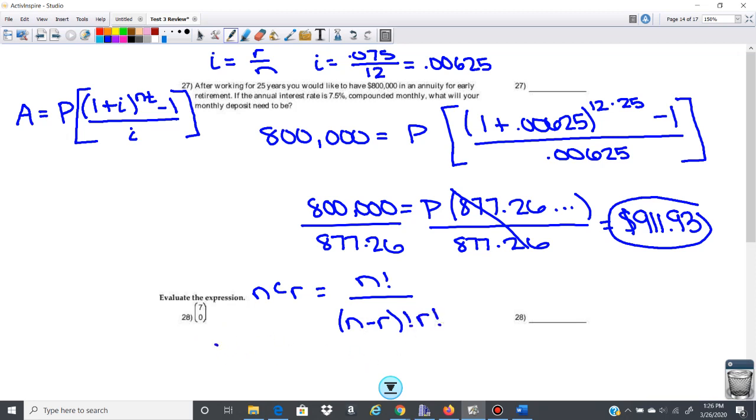So in this case, it would be 7 factorial over 7 minus 0 factorial, and then 0 factorial. And then in this case, that would be 7 factorial over 7 factorial, 0 factorial.